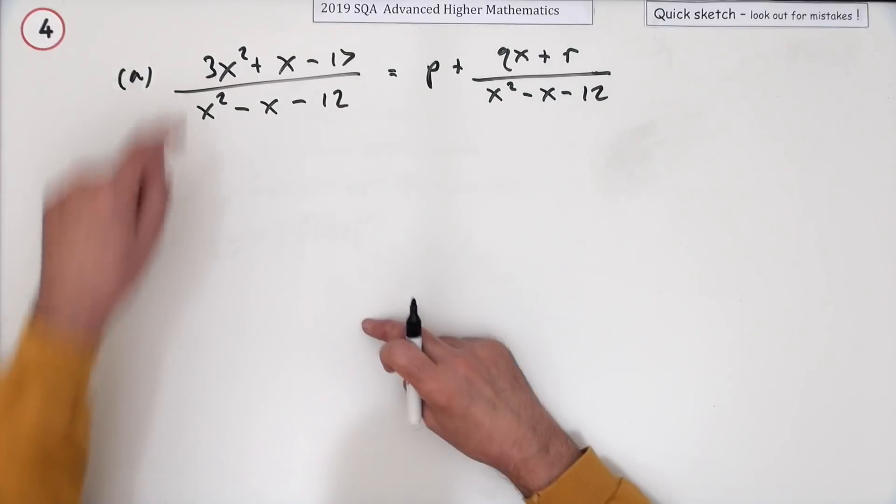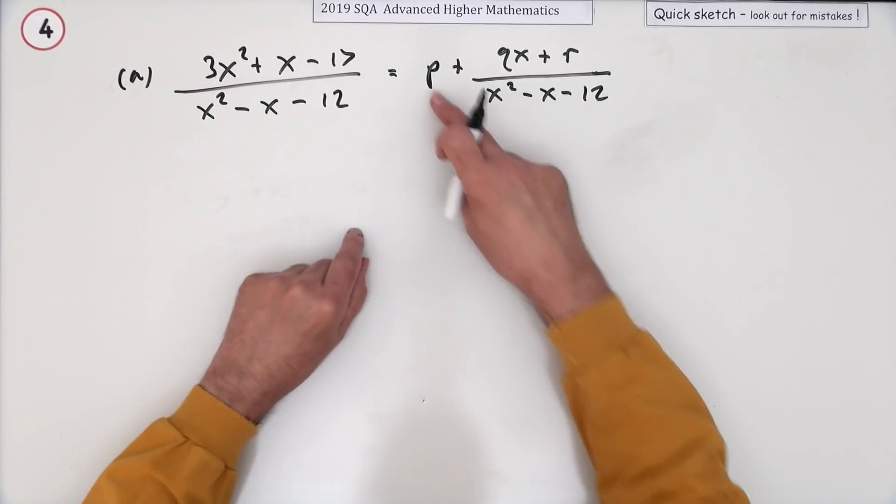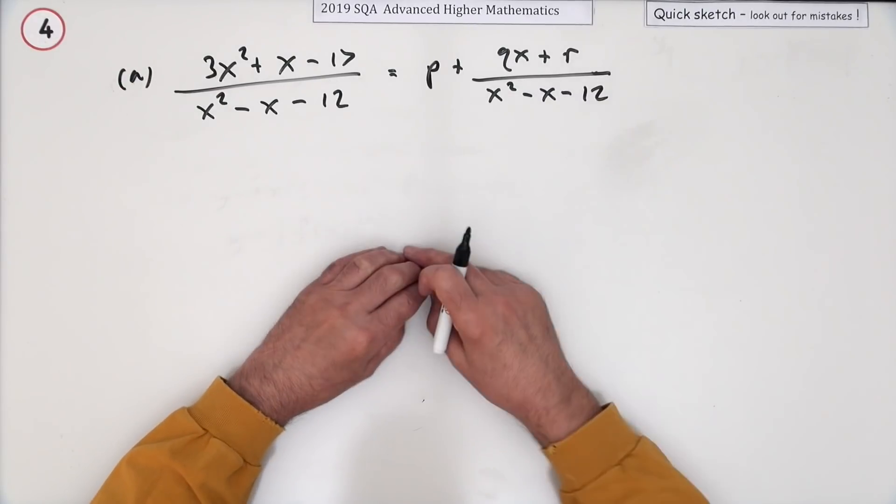Now you know how many times it's going to go in - it's obviously going to go in three times, p will be three. And then you could just think, well I've got three of those, how could I correct it to make the numerator?